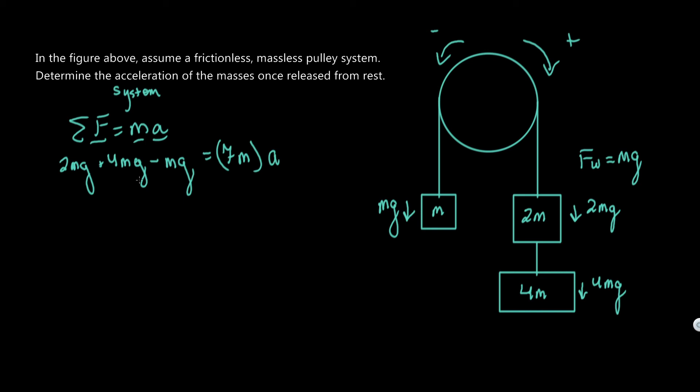So now let's simplify this. 2 plus 4 is 6, minus 1 is 5, so we got 5mg equals 7ma. Now we can see we got a common factor here, m—cancel that. We got 5g equals 7a, and there you go. Divide by 7, we got our answer.